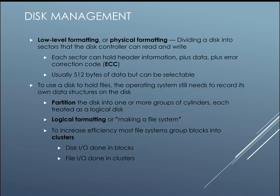For disk management, low-level formatting (or physical formatting) divides a disk into sectors that the disk controller can read and write. Each sector can hold header information, data, and error correction codes — usually 512 bytes, but this can be selectable. To use a disk to hold files, the OS still needs to record its own structure on top of the disk. You partition the disk into one or more groups of cylinders, each treated as a logical drive, then logically format it to make a file system. To increase efficiency, most file systems group blocks into clusters, where disk I/O is done in blocks but file I/O can be done in larger clusters.